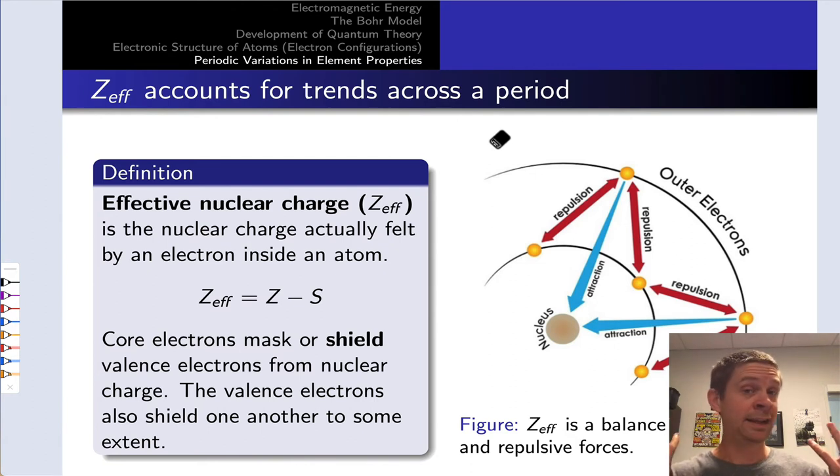That is essentially the origin of the decrease in atomic size. As we add protons to the nucleus, the nuclear charge felt by all the electrons goes up. There's stronger attraction of the electrons to the nucleus, and all of the orbitals and all of the electrons essentially shrink. However, there's a caveat to this simple idea. The caveat is that new electrons that are added to the valence shell don't feel the full impact of the nuclear charge.